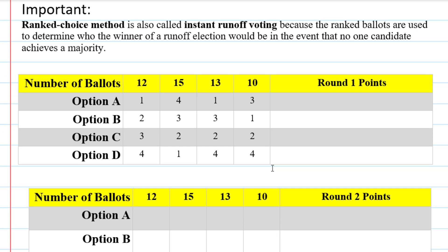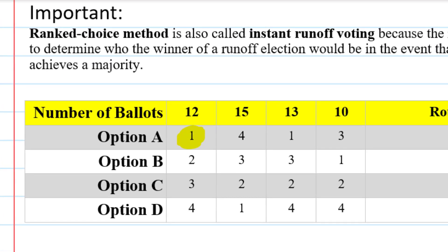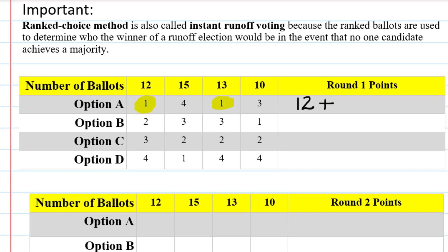In each round, all that matters is who gets first place. When we're calculating the points for round one and we look at option A, option A got first place on the first ballot variation and first place on the third ballot variation. Since there were 12 of the first ballot variation, that means 12 voters ranked A as their first choice, and there were 13 in the third ballot variation. So A gets 12 plus 13 equals 25 points in the first round.